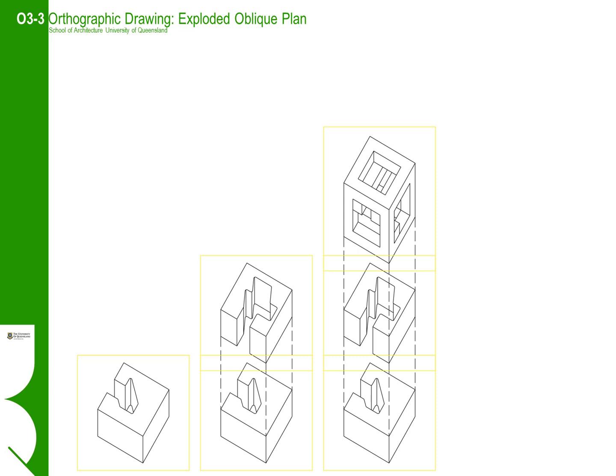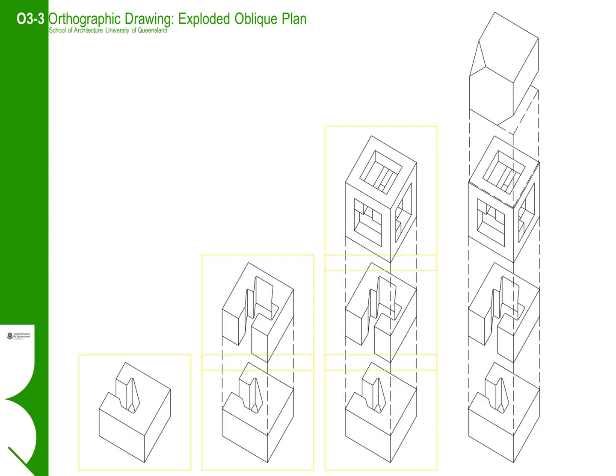Continue the process by aligning the plan oblique view of the stick cube over the previous drawing. Like before, the corresponding verticals should align and there should be enough space between the cubes so that the stick cube does not cover the drawing below. Finally, align your plan oblique of the solid cube on top.